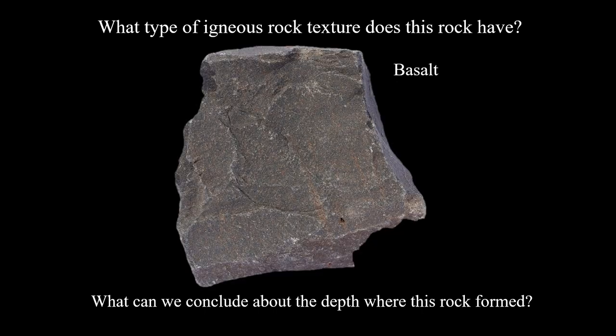A rock chemically identical to that gabbro but analogous to the lava flows of Hawaii is called basalt. It has all those same tiny olivines, but they're very hard to see because it formed from a lava in an extrusive environment, cooling so quickly that all the crystals formed rapidly and can't be seen with the naked eye. We require a microscope, even though chemically these rocks are essentially identical. The image of a rock alone can tell us a lot about where it formed.